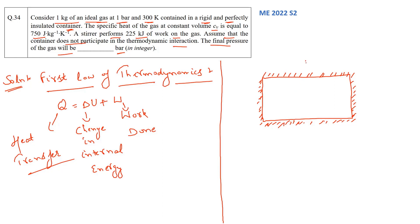One stirrer is there which is rotating and it performs 225 kJ work. Temperature has been given as 300 Kelvin, mass of the container is 1 kg, and pressure is 1 bar. So these are the things which are given to us.